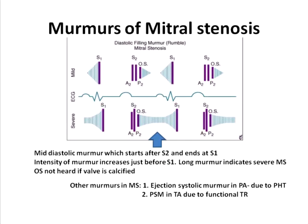Just before S1, the intensity of the murmur increases, which is called pre-systolic accentuation. The duration of the murmur can be used as an indicator of severity of mitral stenosis. Texts often describe the closeness between the opening snap and S2 as an indicator — the closer the opening snap is to S2, the more severe the mitral stenosis. However, since beginners may not appreciate the opening snap, just remember that the duration of the diastolic murmur indicates the severity. The opening snap is not heard if the valve is calcified, so it can only be produced by a pliable valve.